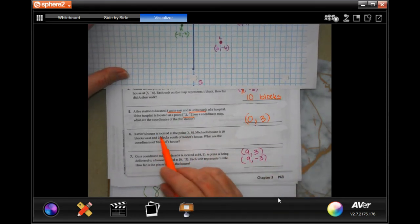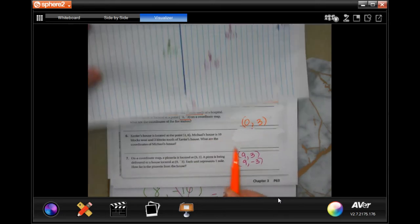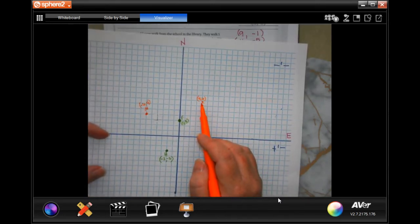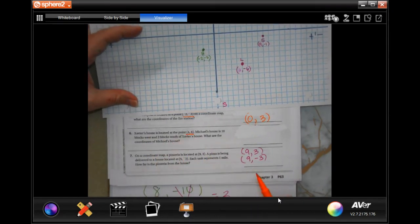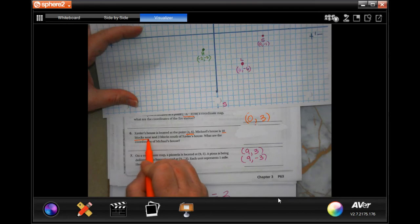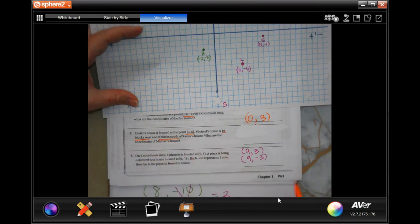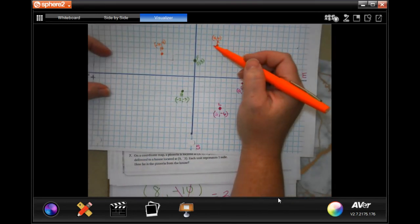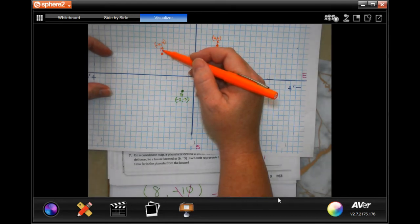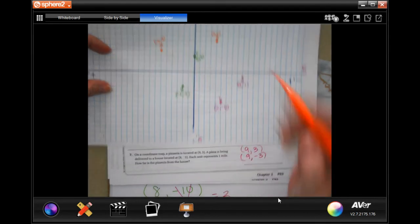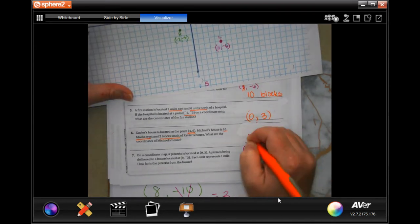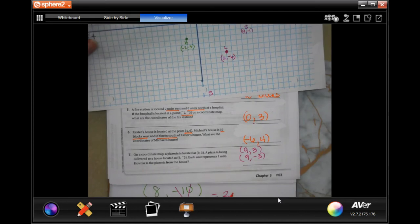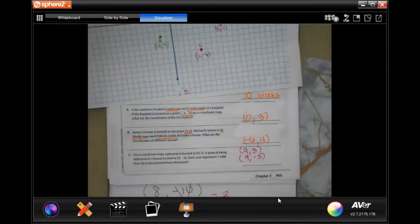Again, Xavier's house, which I've done in orange here, is located at 4, 6. Xavier's house, 4, 6. Michael's house is 10 blocks west and 2 blocks south. So, going 10 blocks over this way and then 2 down leaves me at negative 6, 4.